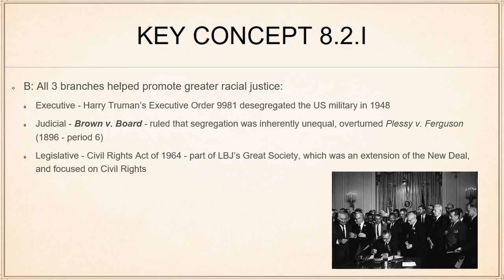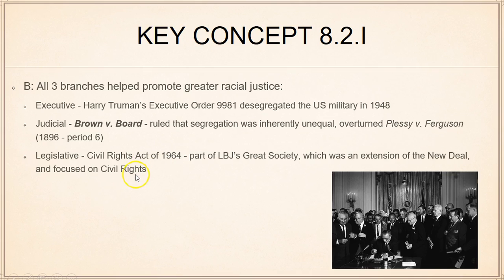Legislatively, the Civil Rights Act of 1964 is the big one — part of Lyndon Baines Johnson's Great Society. LBJ is JFK's vice president who becomes president when JFK is assassinated in 1963. LBJ's Great Society is an attempt to extend and build on the New Deal, though it's a mixed bag historically — most measures are underfunded and the Vietnam War takes a lot of wind out of its sails. The Civil Rights Act of 1964 ends segregation by law as far as the federal government was concerned, the Voting Rights Act of 1965 is another big one, and there's the Civil Rights Act of 1968 — all three under LBJ's administration.